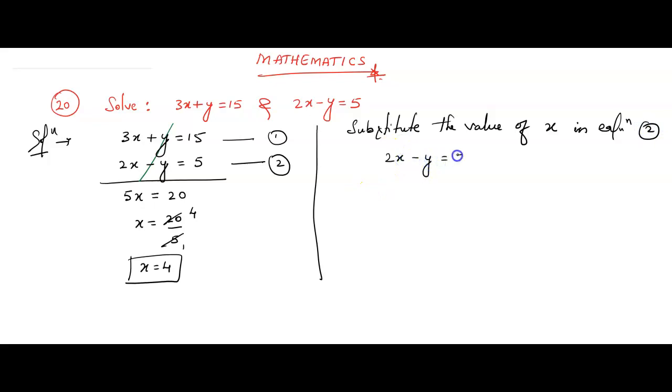What is equation 2? 2x minus y equals 5. In place of x, we substitute 4. You can see here, this 4 we are substituting here, minus y as it is, that equals 5. 2 fours are 8 minus y equals 5.